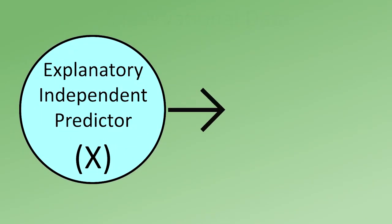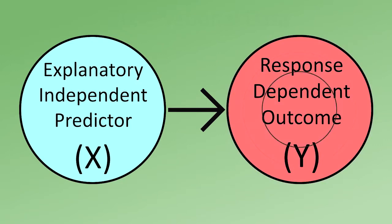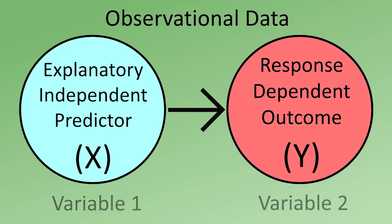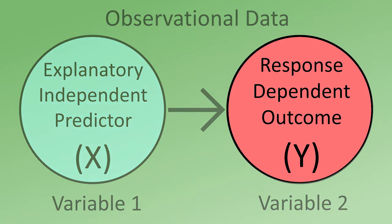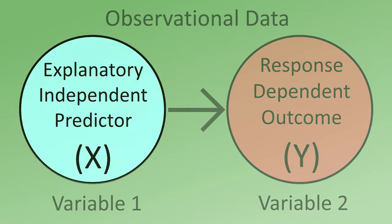It's important to understand that when studying two variables, each variable has a role to play. A variable may either be a response variable, also known as the dependent variable or outcome variable, or it could be the explanatory variable, also known as the independent variable or predictor variable.